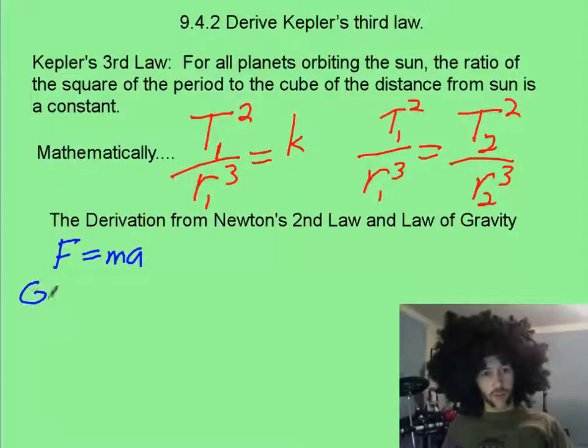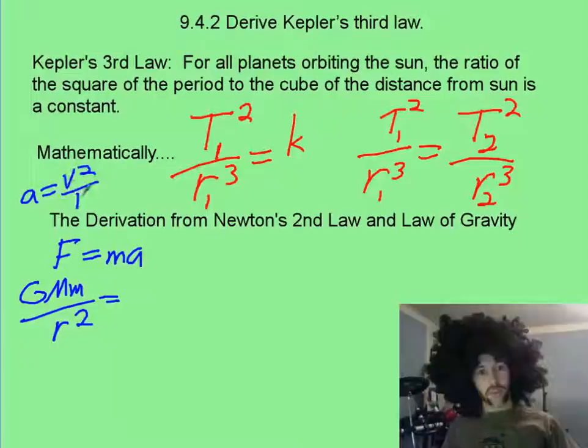Hopefully, you filled in Newton's universal law of gravitation, which is this. And you also knew that for circular motion, A equals V squared over R,